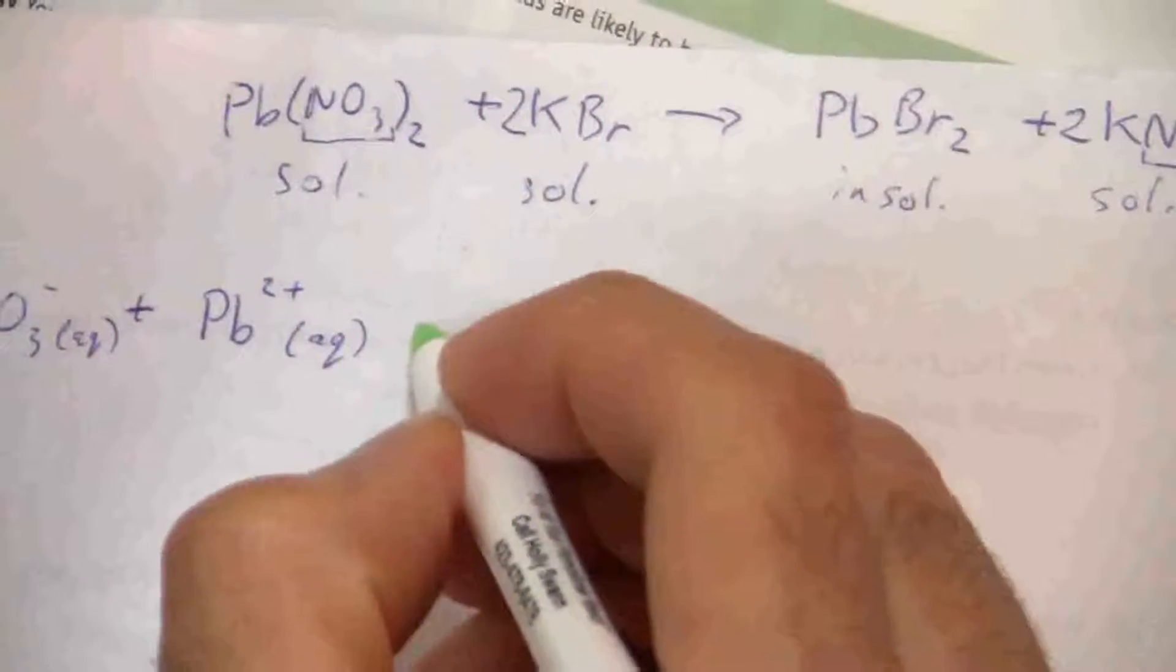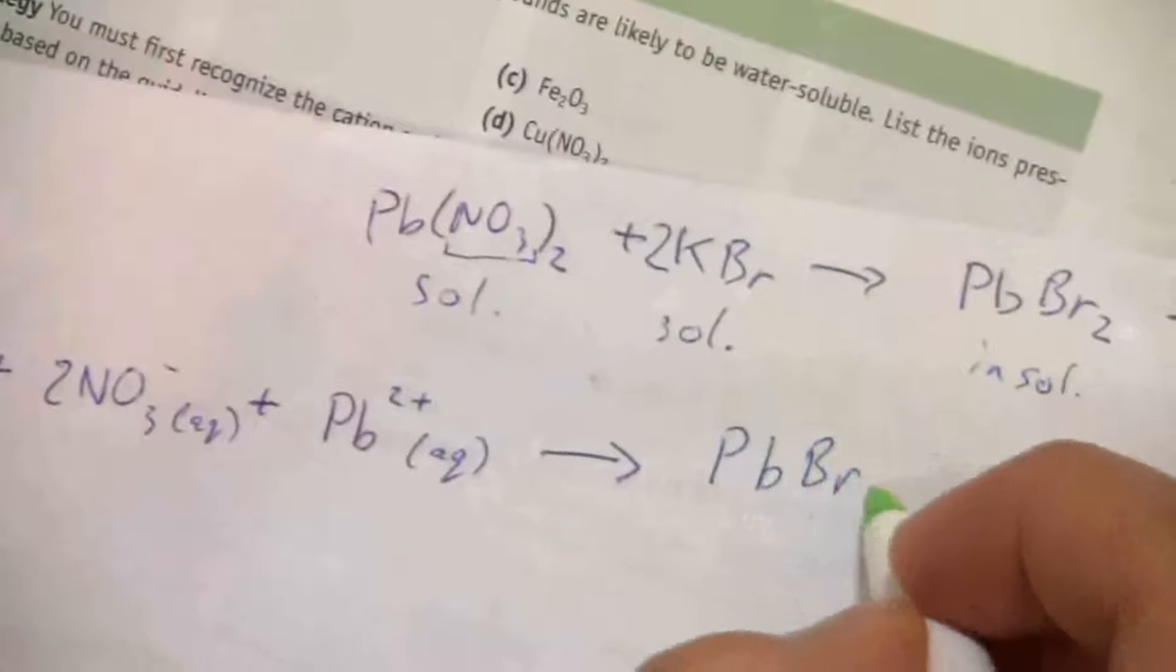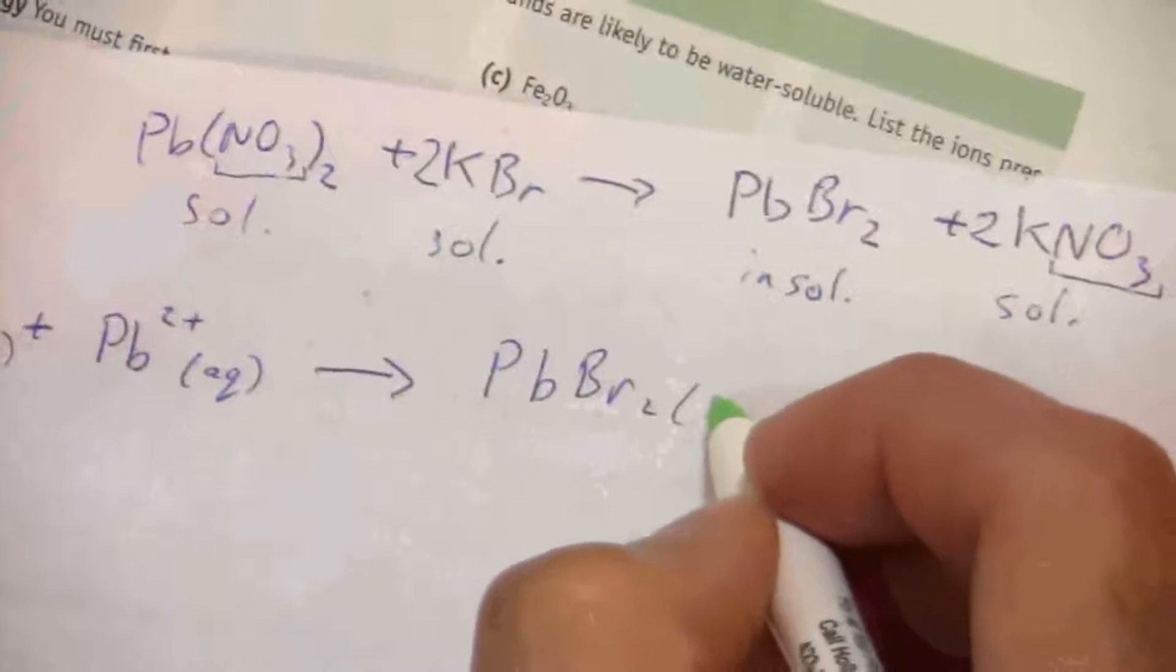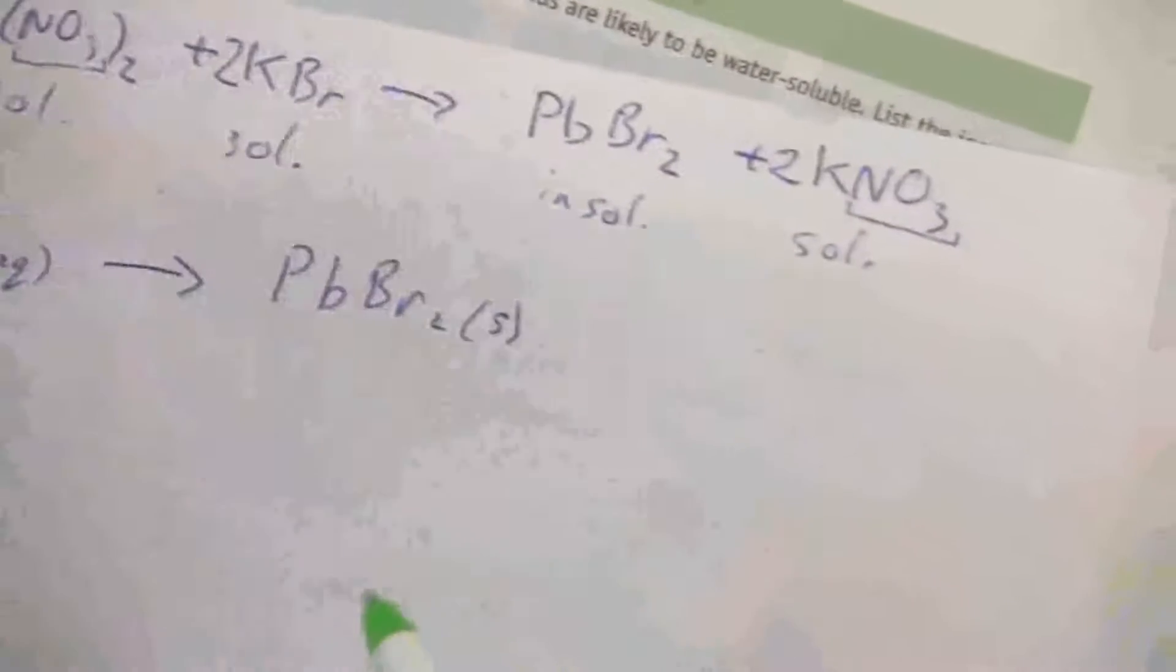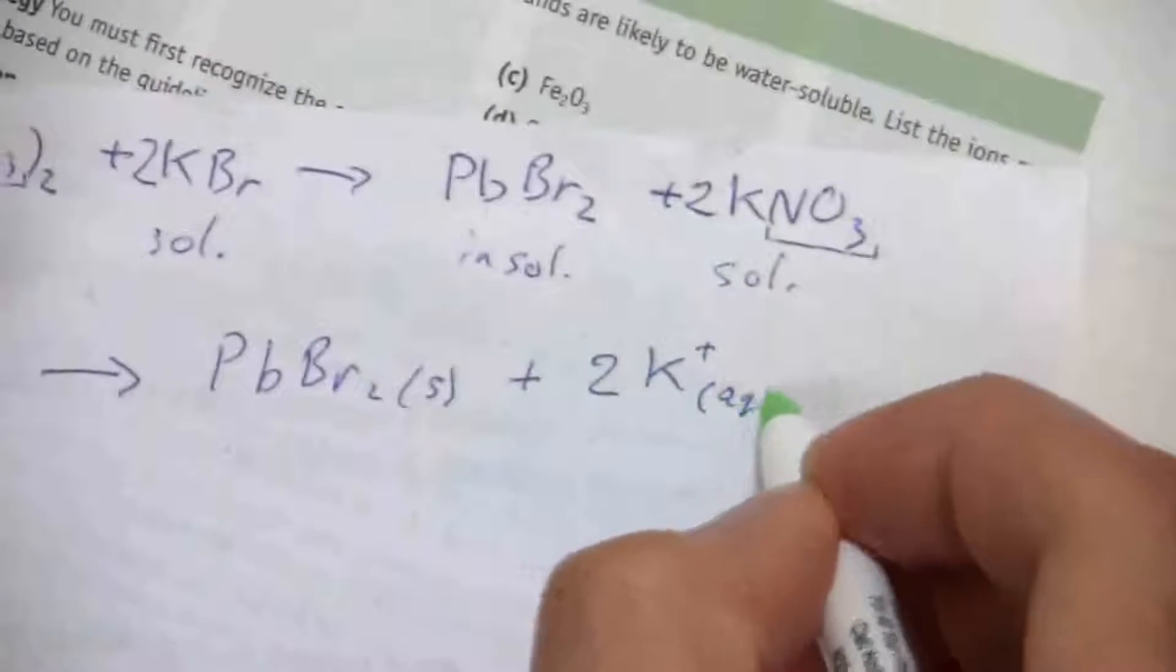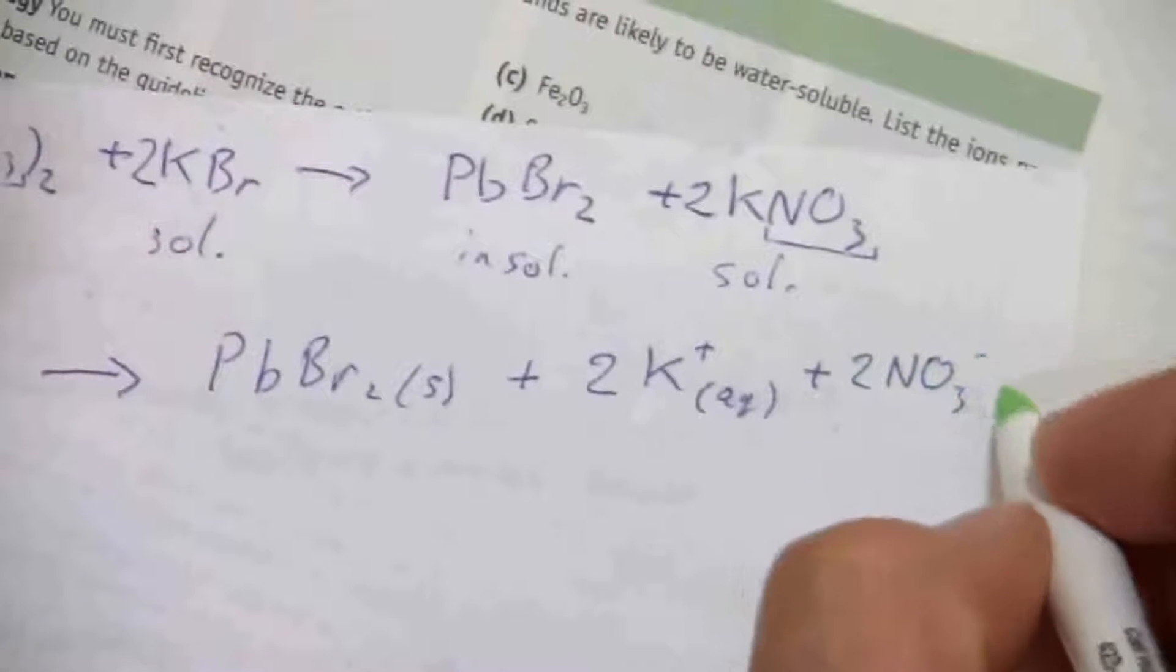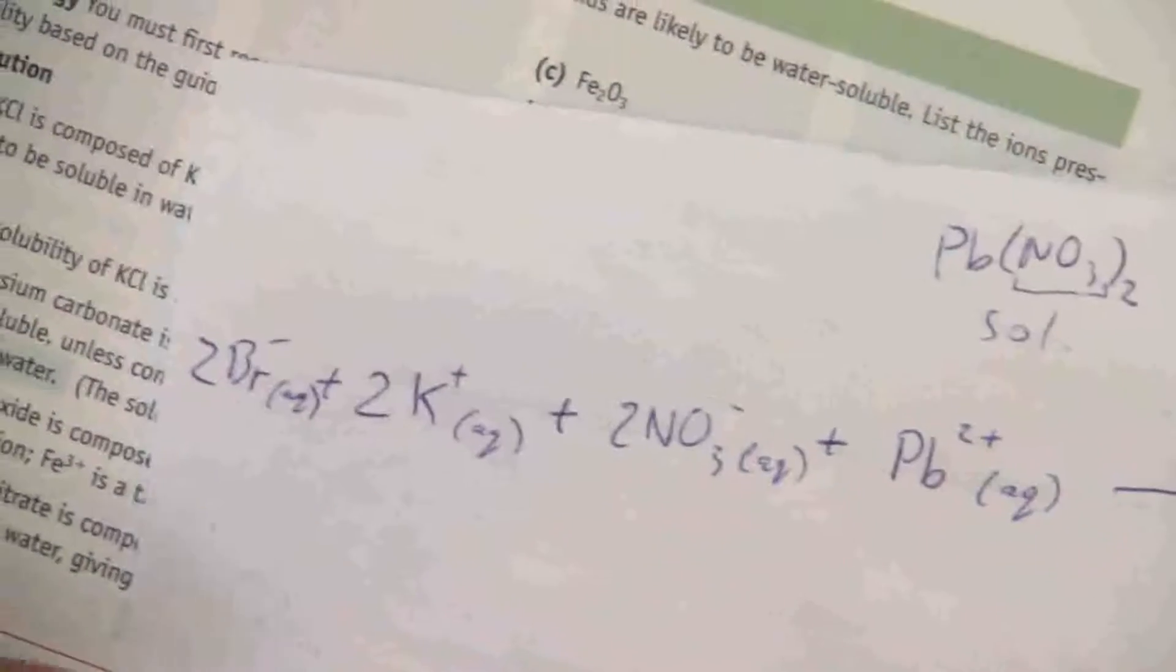So those are my reactants. And then on the product side, I'll have the PbBr2. And this one is an insoluble compound. So that will be a solid. It's still in the solid state, and so I have to note that. This will separate. And so I have two potassium ions in aqueous solution, and then two nitrate ions. So there we have it. There's the total ionic equation. You see why I went backwards now? They do take up a little bit of space.